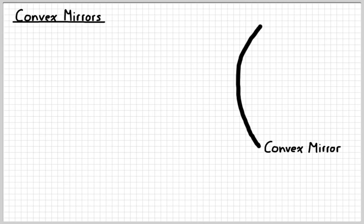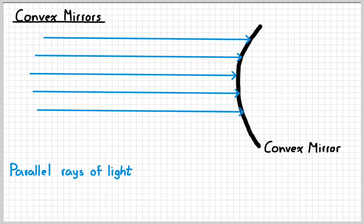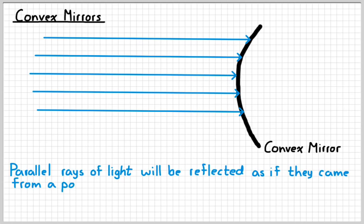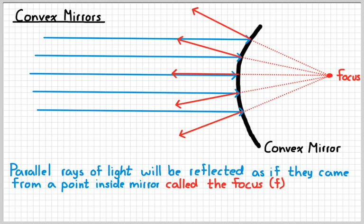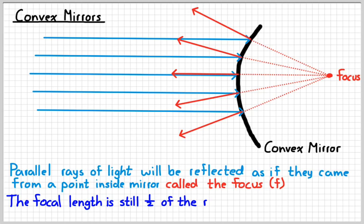Now let's look at convex mirrors. For a convex mirror, parallel rays of light are reflected away and don't cross at a single point — instead they act like they came from a single point, which we still call the focus. You can trace the reflected rays back to that single point. The focal length is still one-half the radius of curvature, so F equals one-half C.